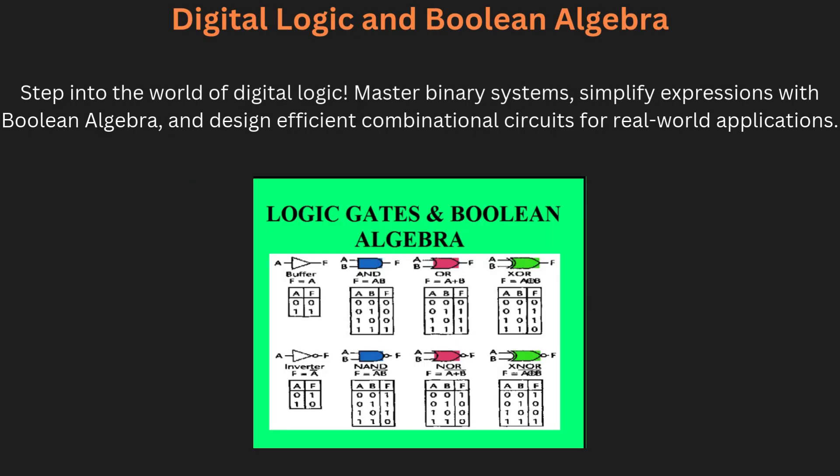Now moving to digital logic and Boolean algebra. Digital electronics begin with understanding the binary number system and its variations such as BCD, ASCII, and Gray code. Conversion between systems forms a fundamental skill. Boolean algebra is revisited, emphasizing the SOP and POS forms for logic expression representation. Minimization techniques using algebraic methods are crucial for simplifying circuits.